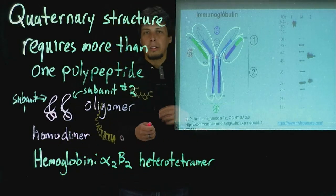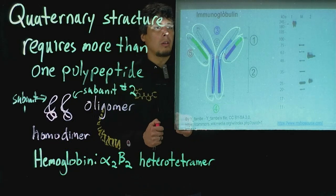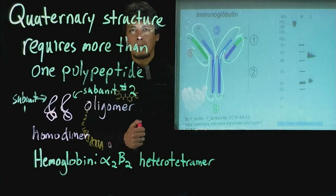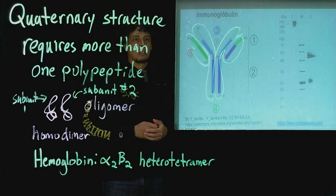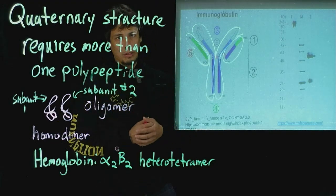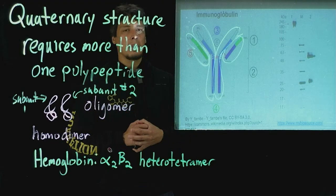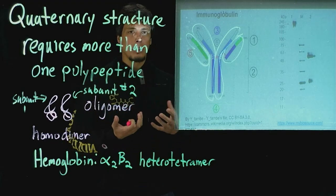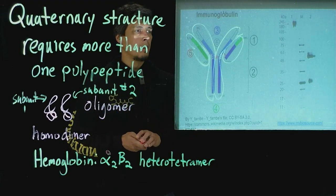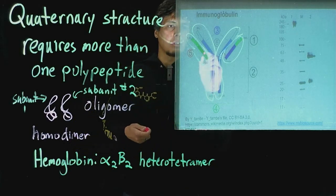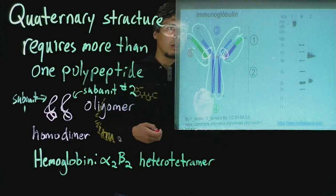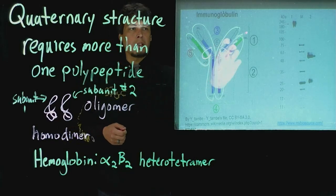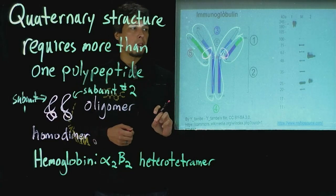If we denature this, remember an SDS page gel is largely a denaturing technique. We can unfold this protein and we can also add a disulfide reductant to break disulfide bonds that are present, that link together the small chain and the large chain of the immunoglobulin.